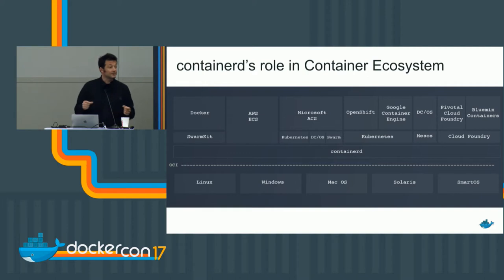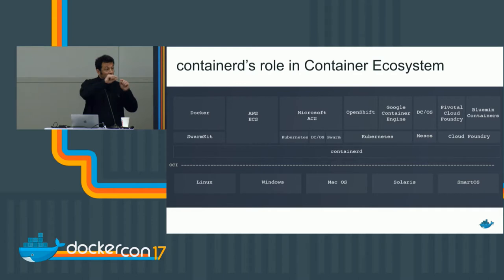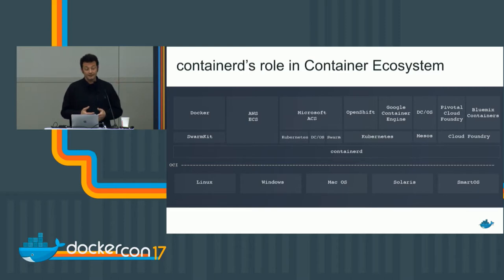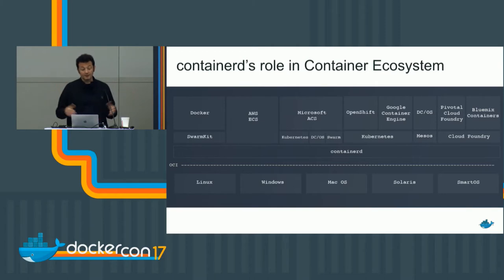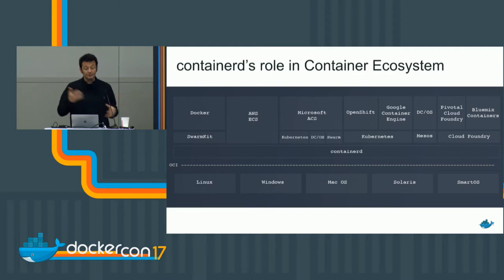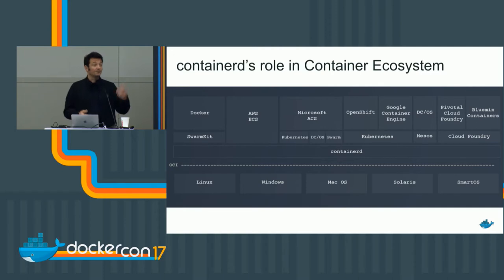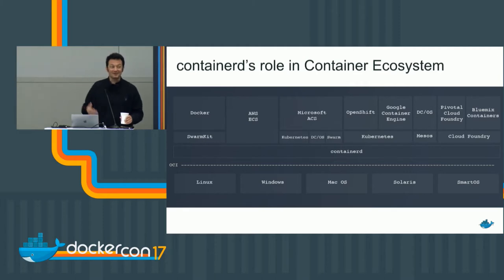ContainerD is the piece in the stack that really runs containers. Its role in the ecosystem is to have one thin layer of standards — made in the OCI project, the Open Container Initiative — for runtime and image. Then ContainerD implements that, and the whole industry can build higher-level systems on top. For example, Amazon ECS could use ContainerD — Arun, that's your weekend project number three, once you get your hands on Moby.